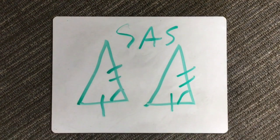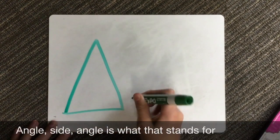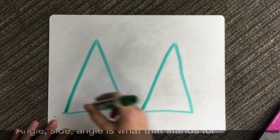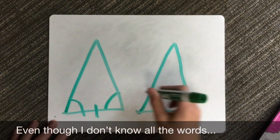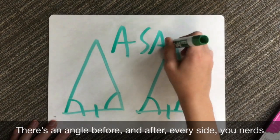A-S-A is S-A-S backwards. Angle-side-angle is what that stands for. Even though I don't know all the words, there's always an angle before, and an angle after every side, you nerds.